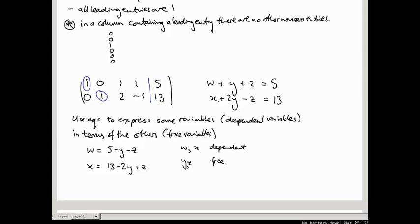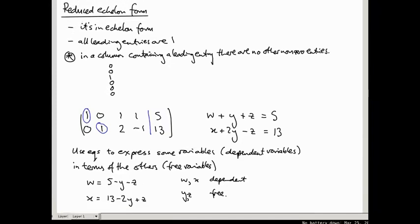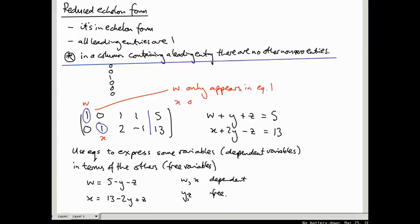You've already done all the simplification you needed. And the reason this works is precisely condition star. This condition here. So in a column containing a leading entry, there are no other non-zero entries. If we take our dependent variables to be the ones whose coefficients are the leading entries, so in this case W from this first leading entry, and X from the second, then those variables are only going to appear in one equation at a time. That's what it means to have no other non-zero entries in the corresponding column. So this is saying W only appears in equation one, and X only appears in equation two. It's because all the other entries in that column are zero.